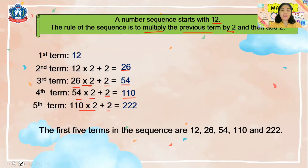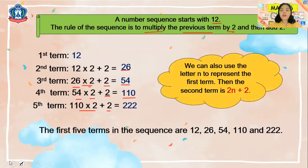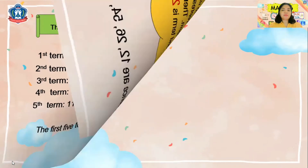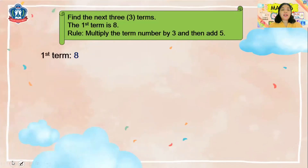Remember that we can also use the letter n to represent a term. The second term can be written as 2n + 2, where n represents the previous term. So if we have 2n + 2 and n is 12, that is 2×12 + 2 = 24 + 2 = 26.